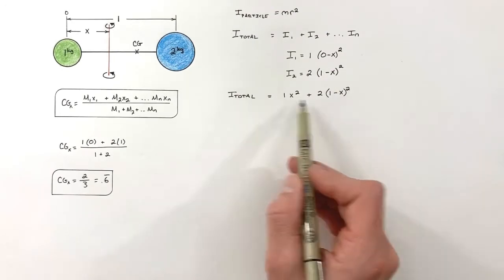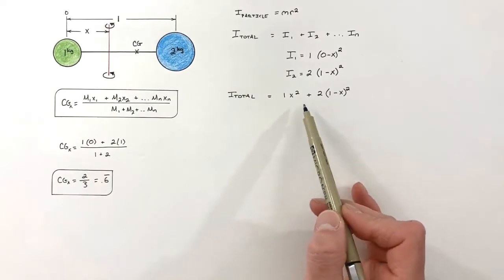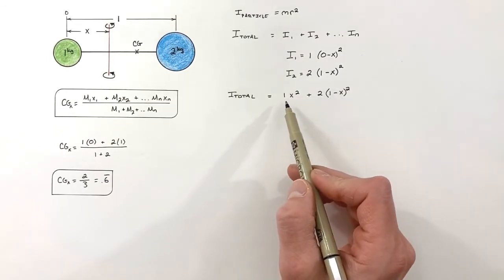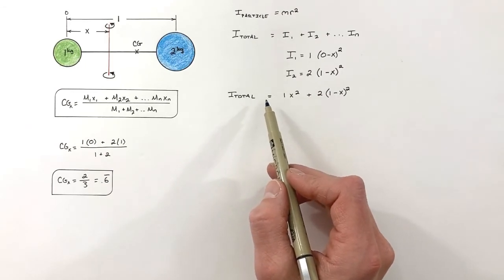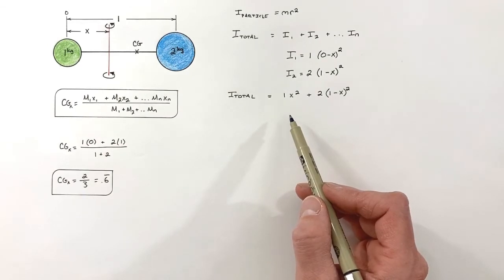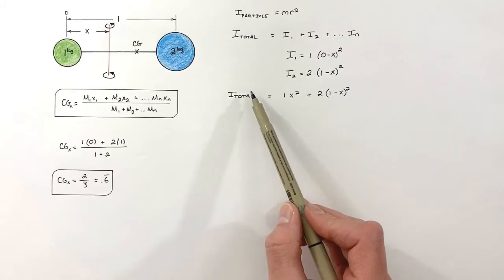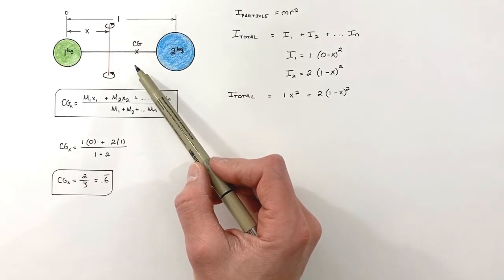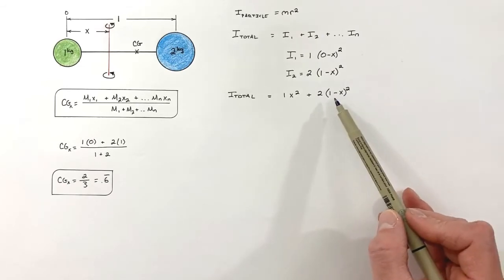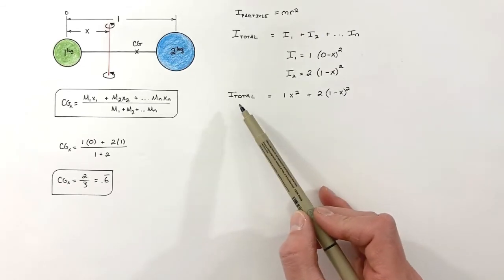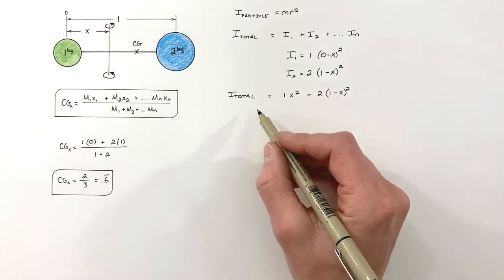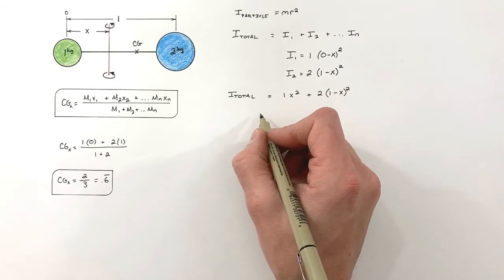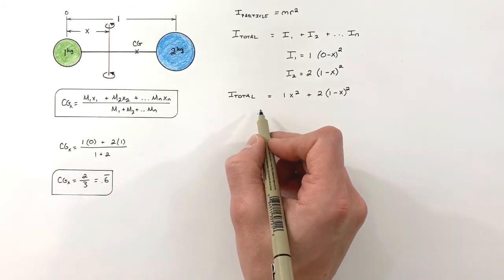Putting these together, we get a total inertia function for this system as a function of x. This lets us plug in any value for x and find the rotational moment of inertia around our axis of rotation. What we're trying to do is prove that this rotational moment of inertia is minimized when the axis of rotation passes through the center of gravity. Using calculus, we can find where our rotational moment of inertia is minimized by taking the derivative of I with respect to x.